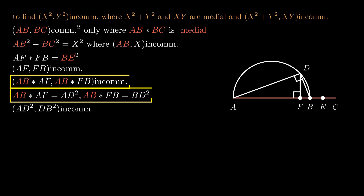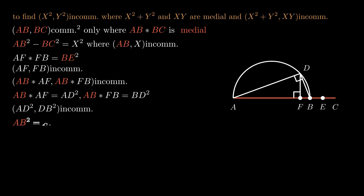ab is medial, so ab squared is medial, and by the Pythagorean theorem ab squared is equal to ad squared plus bd squared.